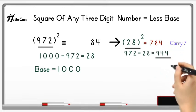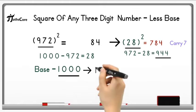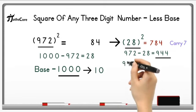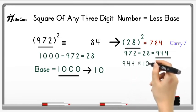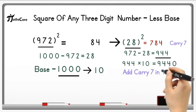Now multiply 944 with the base number. So base is 1000. So instead of 1000 we will take 10 here. So 944 multiply by 10 is equal to 9440. Now add this carry 7 in this number.